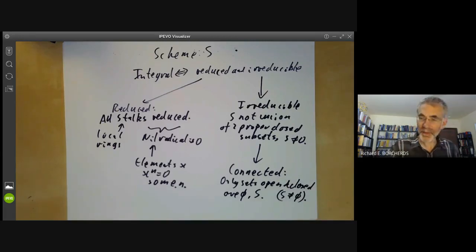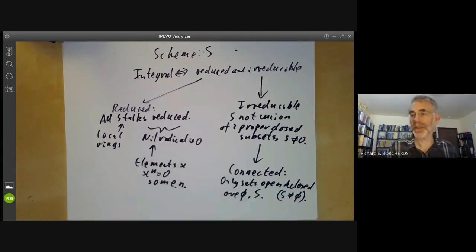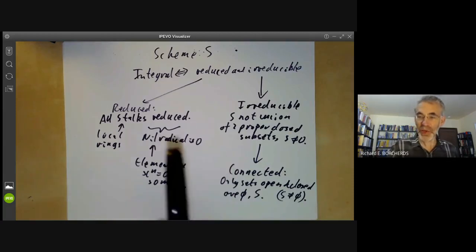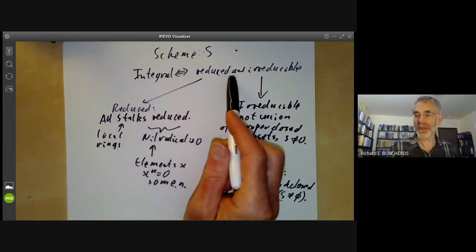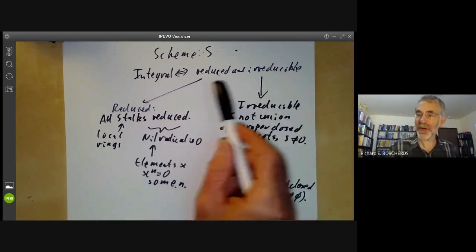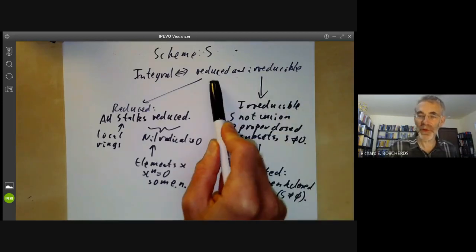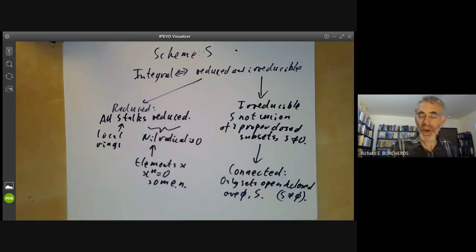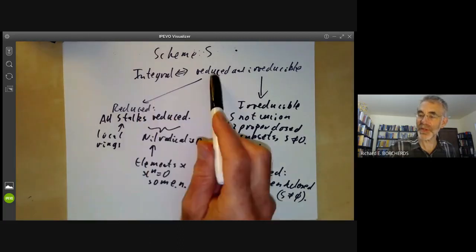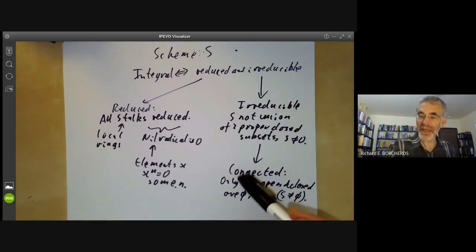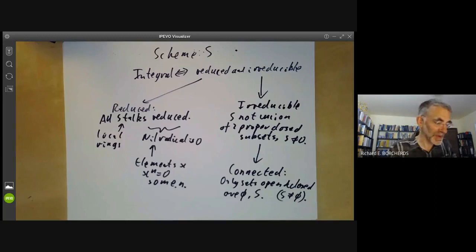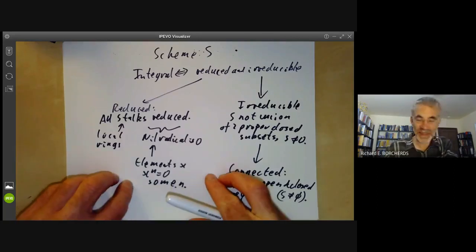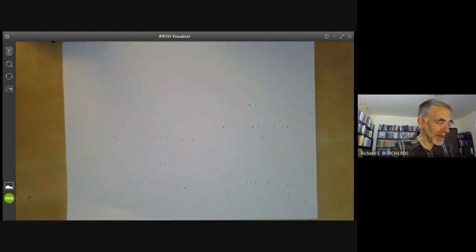This gives a forewarning of one of the problems with scheme theory in that there are huge numbers of definitions of various properties, and it's a real headache trying to remember all the different properties and what the relations between them are. We don't get this problem nearly so much if we're looking at varieties — all varieties are automatically integral, reduced, irreducible and connected, so we can ignore these properties because they're automatically satisfied.